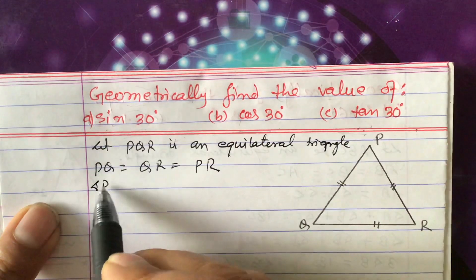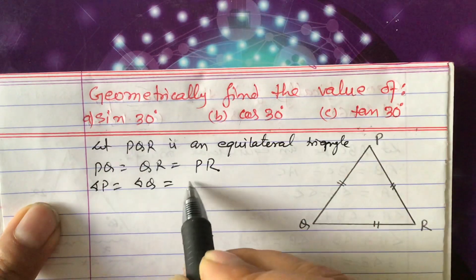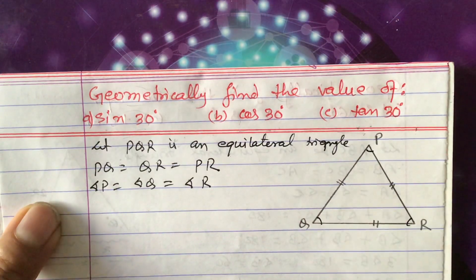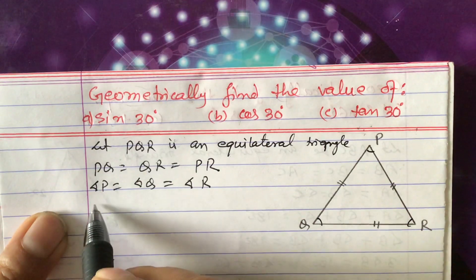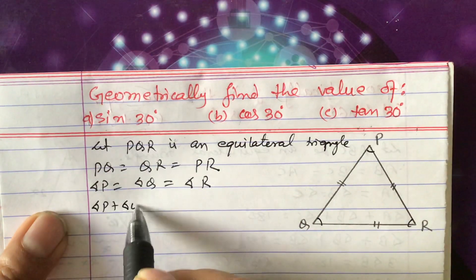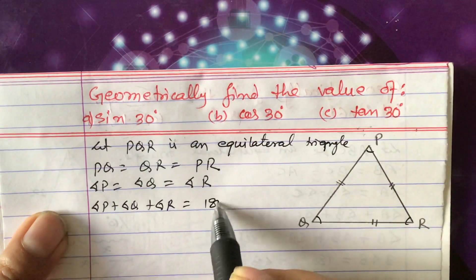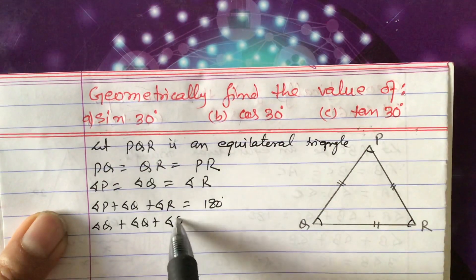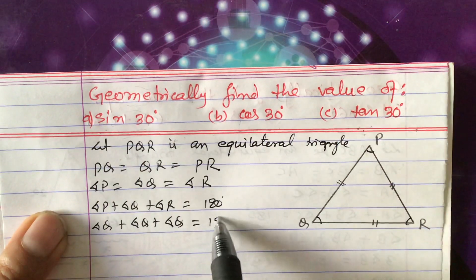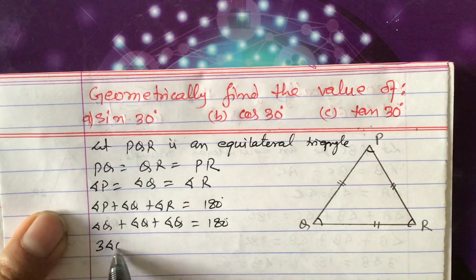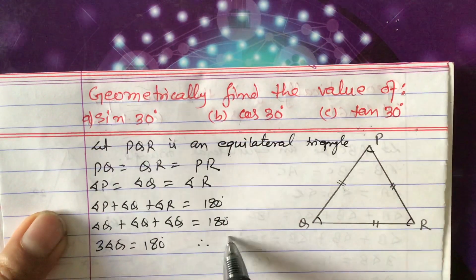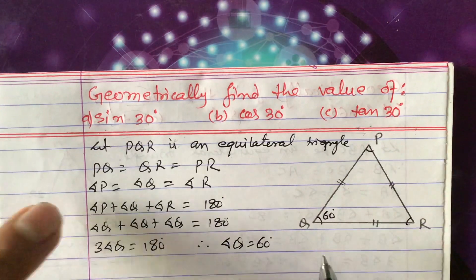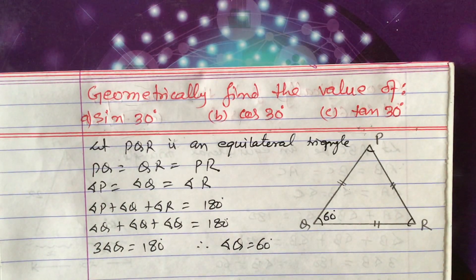If it is an equilateral triangle, then PQ = QR = PR — all three sides are equal. Not only that, angle P = angle Q = angle R also. Since these three angles are equal, angle P + angle Q + angle R = 180°. So 3 × angle Q = 180°, therefore angle Q = 60°. This angle is 60°, and so are the other two.